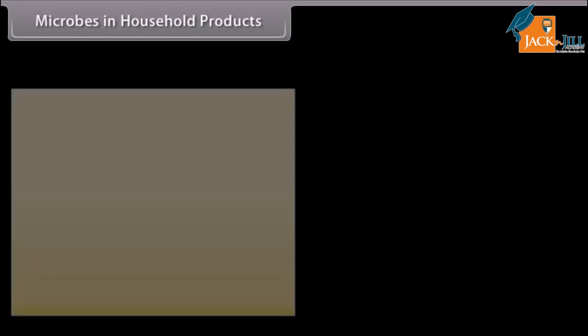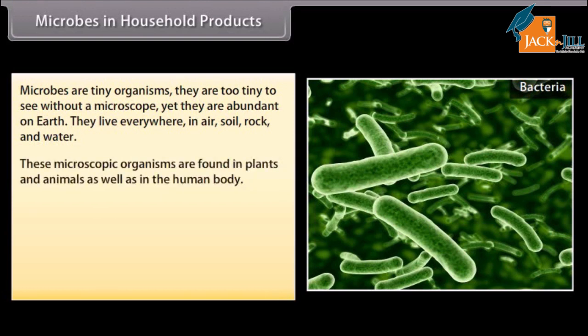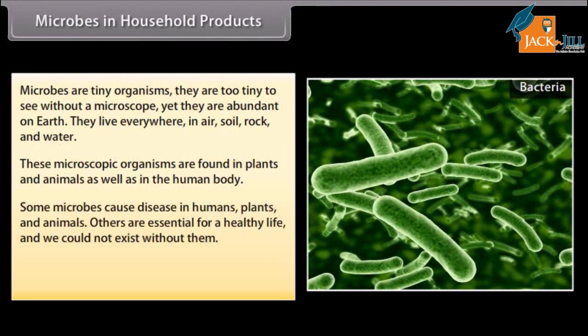Microbes in household products. Microbes are tiny organisms, too tiny to see without a microscope. Yet they are abundant on earth. They live everywhere — in air, soil, rock and water. These microscopic organisms are found in plants and animals as well as in the human body. Some microbes cause diseases in humans, plants and animals.